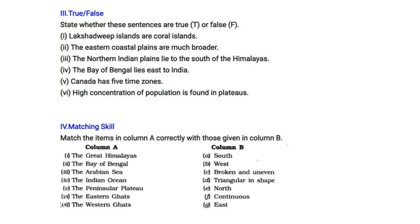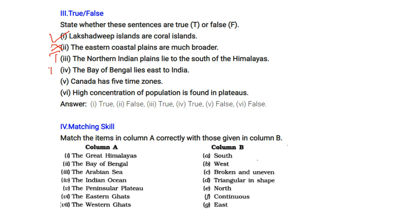True and false: Lakshadweep Islands are coral islands — True. The eastern coastal plains are much broader — False, they are narrower. The northern Indian plains lie to the south of the Himalayas — True. The Bay of Bengal lies to the east of India — True. The Arabian Sea lies on the west — True. Canada has five time zones — False. High concentration of population is found in plateaus — False; the high concentration is found in the plains.